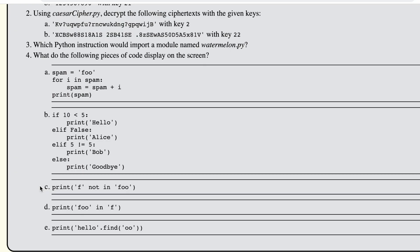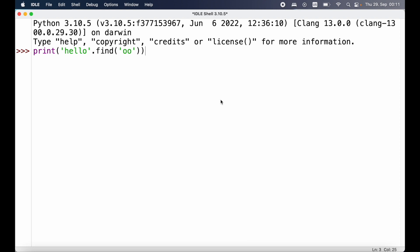Next we have a print statement checking if 'foo' is in 'f'. That should also evaluate to false — 'f' is in 'foo' but 'foo' is not in 'f' because 'f' is a single character. Let's run that in the interactive shell — false is indeed displayed. Finally we have a print statement using the find function: inside the string 'hello' we're searching for 'oo'. We have one 'o' at the end but not two consecutive o's, so find returns minus one, indicating the string was not found. We verify this in the interactive shell and get back minus one.